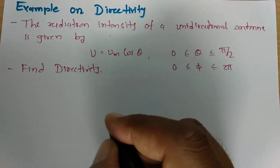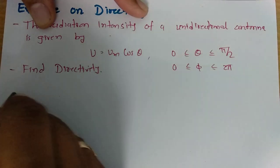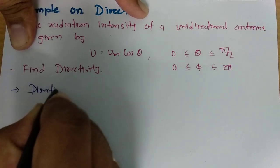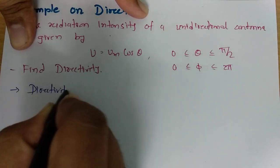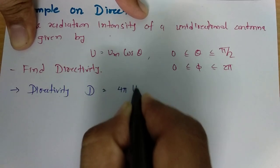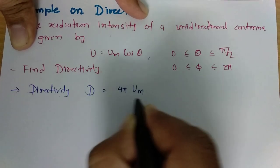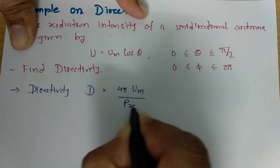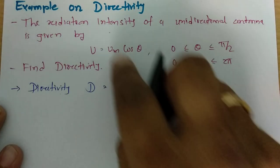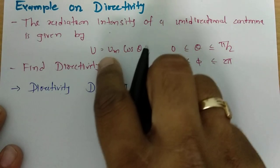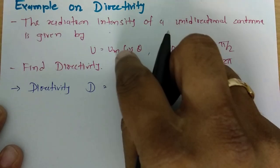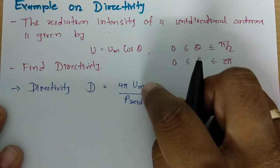The basic directivity formula is: D = 4π·Umax / Pradiated. Here, Umax equals Um, because the maximum value of cos(θ) is 1, so Umax is Um.